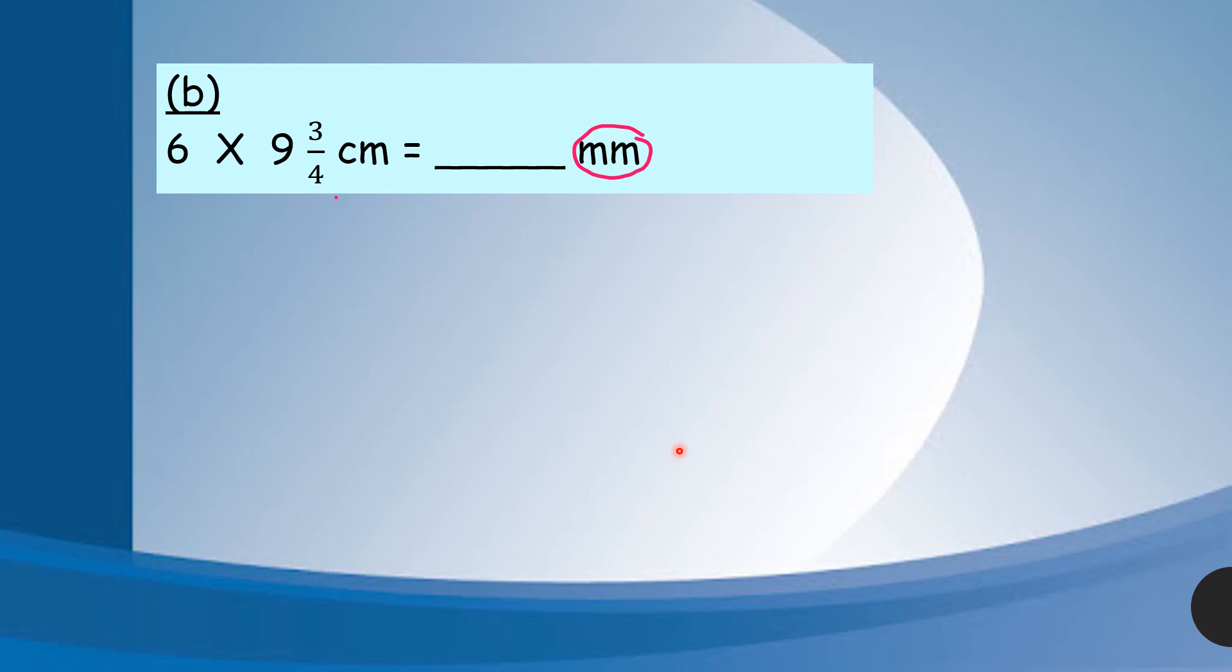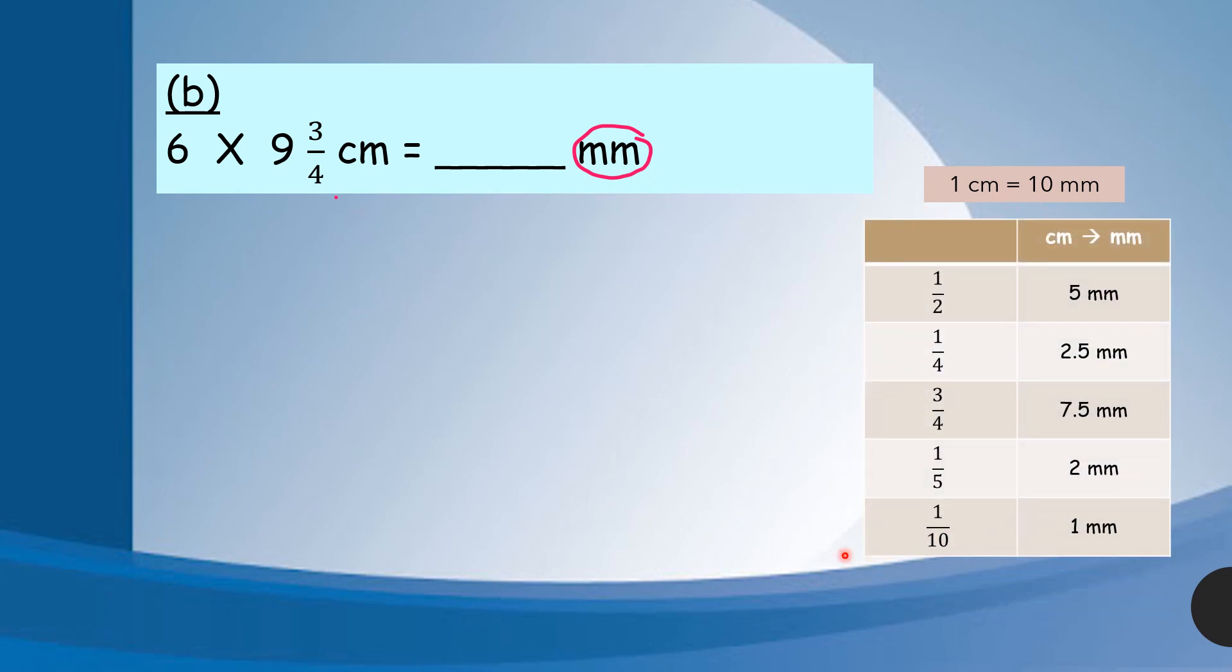Question B. Check the unit first - this is in cm and the answer is in mm. Do you still remember the relationship between cm and mm? 1 cm is equal to 10 mm. We need the fraction because there is a fraction in the question, 3 over 4 cm. We need to convert 3 over 4 cm to mm.